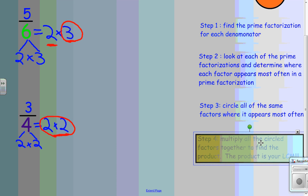And step number four, we are going to multiply all the circled factors together to find the product, and the product will be our least common multiple.